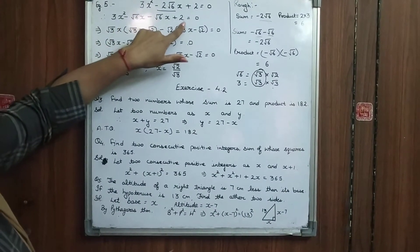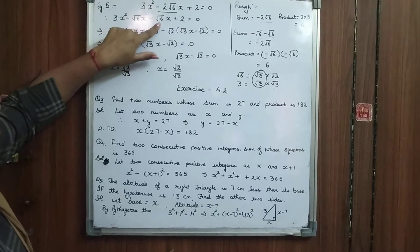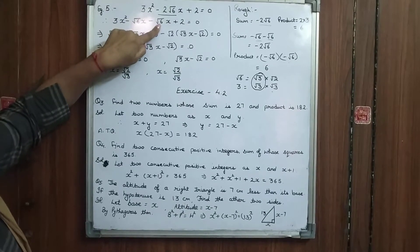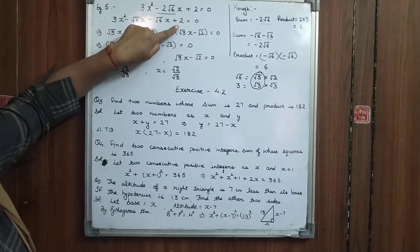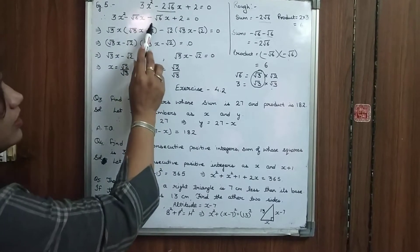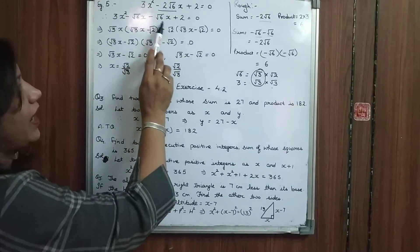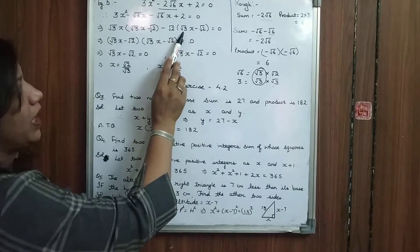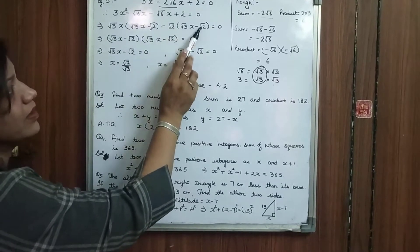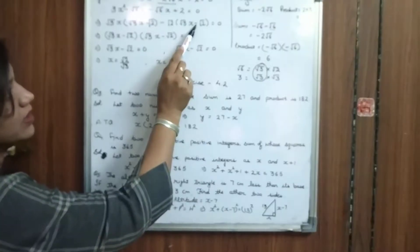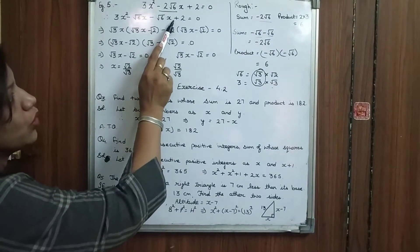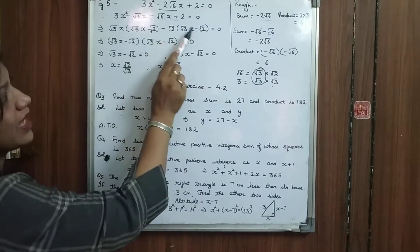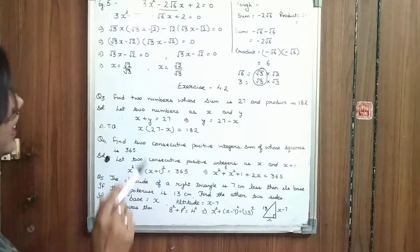What can we take common in the second group? In the same way, this is √3 into √2 and 2 is √2 into √2. So we can take √2 common here, and it's left behind again √3x minus √2. Why is the minus sign here? Because I have taken the minus sign common, so the sign will be changed.